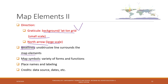You can also label places, or include labels for other special features like roads, water bodies, etc. You can also have other text, such as the data source, the date the map was produced, and also the authors.